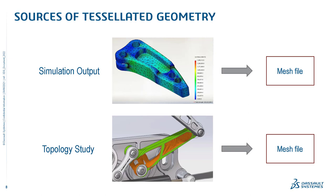The output of a simulation study can also be a mesh file used for modeling. We have the export deformed geometry functionality in SOLIDWORKS Simulation, and the output of a topology simulation study is also a mesh file that you use as a guide for creating a new part — or you can work directly in SOLIDWORKS with the mesh file to create the final geometry informed by the topology study.